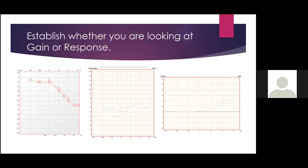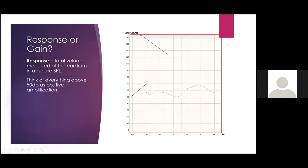Let's think about the different types of REM screens. On the response screen, you're measuring the volume at the eardrum — a scale from 0 to 140 dB SPL. Gain is any output above the stimulus level, and the gain scale on the Y-axis is smaller, going from 0 to 60. In most examples today I'll use the response screen because it's simple and you get more information. Anything above 50 dB represents positive amplification.